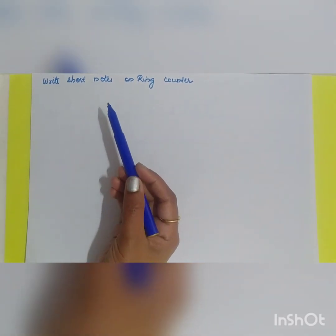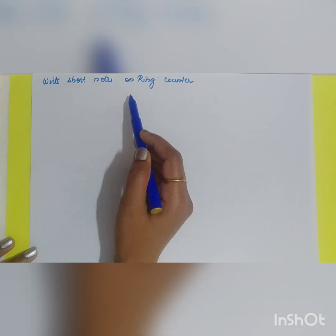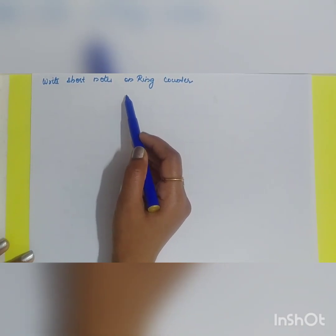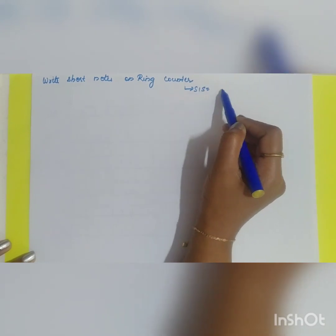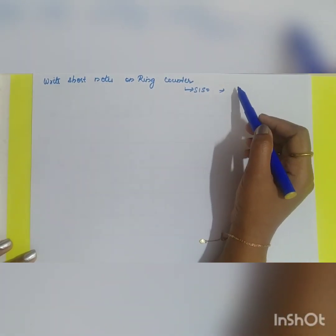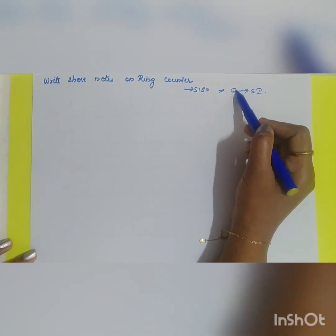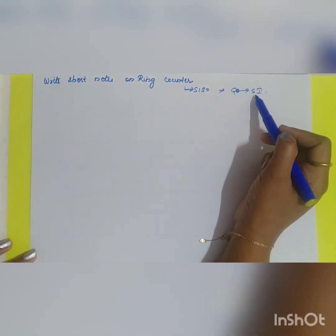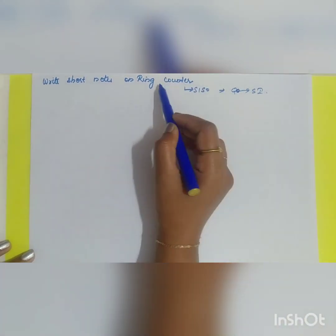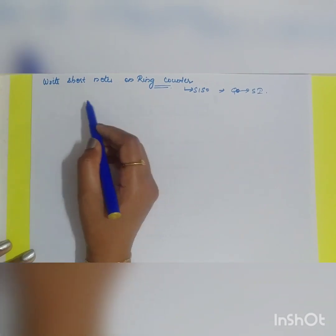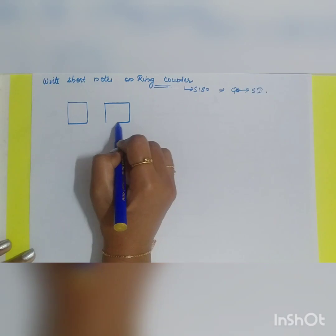The next question is to write short notes on a ring counter. In the last video we saw the serial-in serial-out register. If the output Q0 of the serial-in serial-out register is connected back to the serial input, then it acts as a ring counter. Let me redraw the diagram once again — a 4-bit serial-in serial-out register.